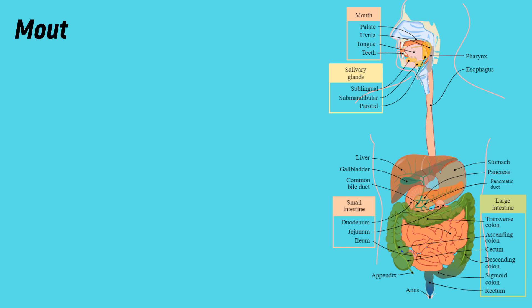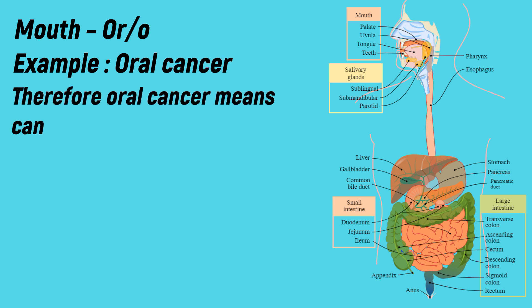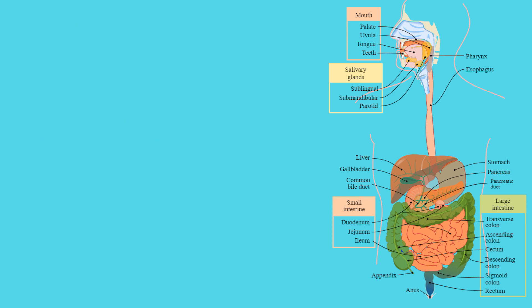Mouth: the medical term for mouth is 'oro'. Example: oral cancer. Oro indicates mouth. Therefore, oral cancer means cancer in the mouth.